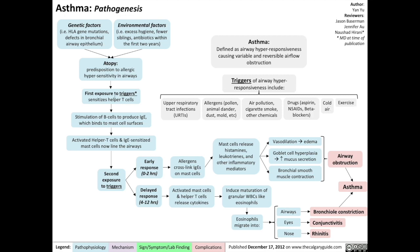Exposure to these triggers could sensitize helper T cells, which then stimulate B cells to produce IgE antibodies, which in turn bind to mast cells. The activated helper T cells and IgE-sensitized mast cells now line the airways of the lungs. Once the patient is exposed to triggers a second time, the pathogenesis of asthma begins, involving an early response for the first two hours and a delayed response for the 4th to the 12th hour after exposure.